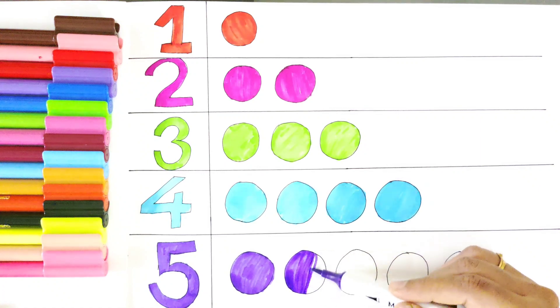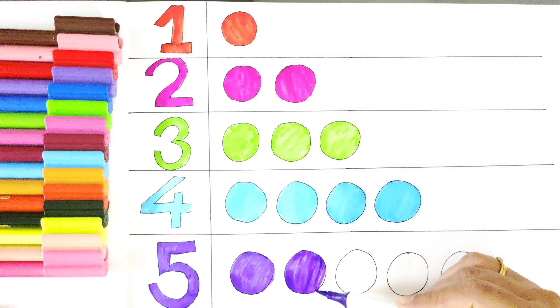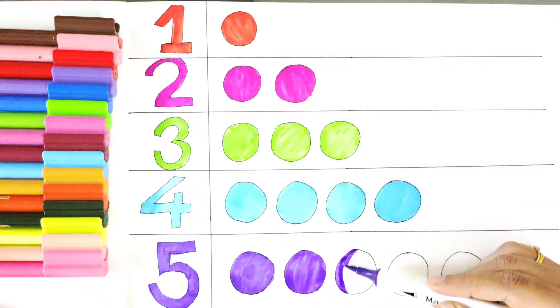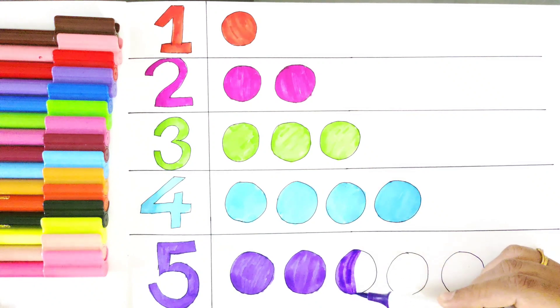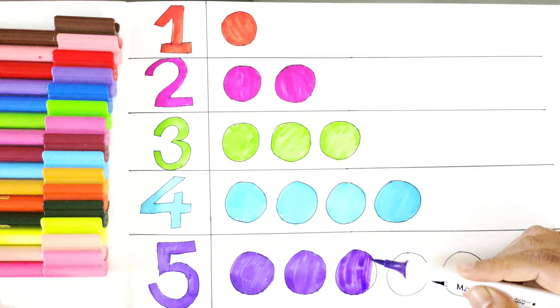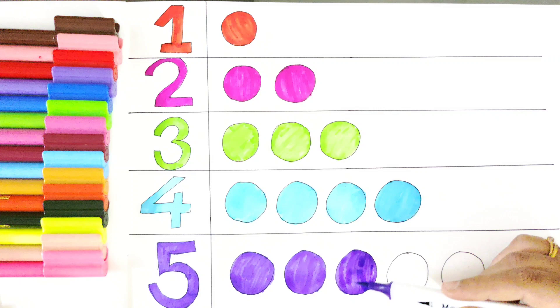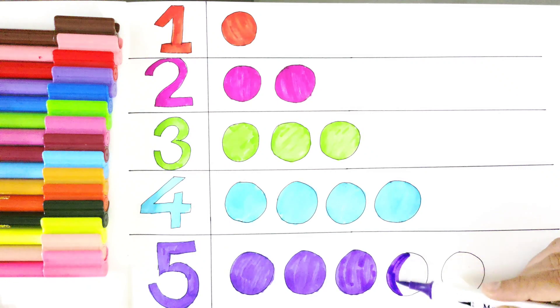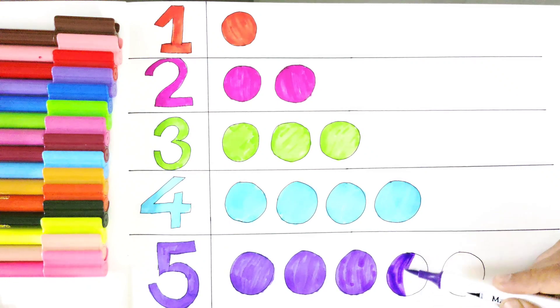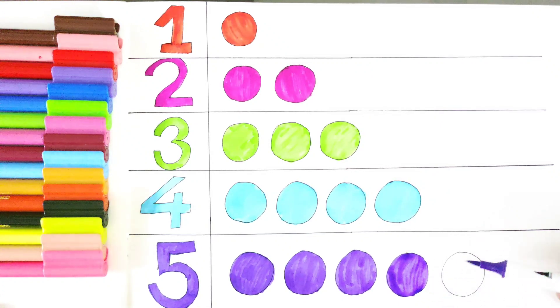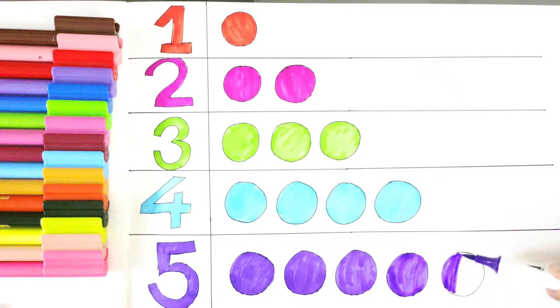One, two, three, four, and five. This is the fifth ball in purple color.